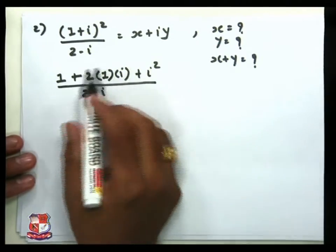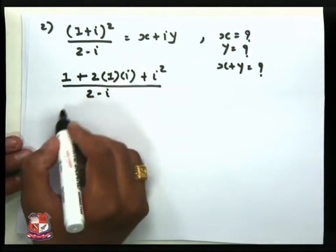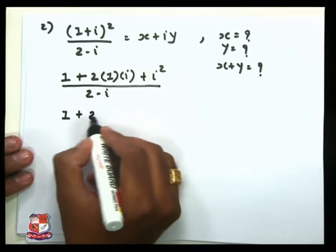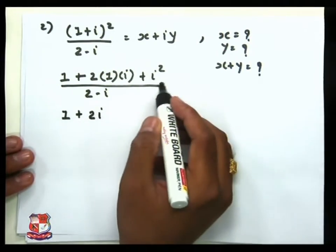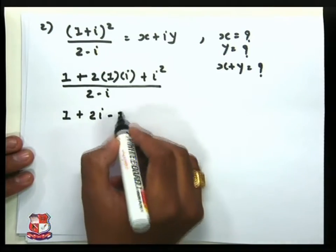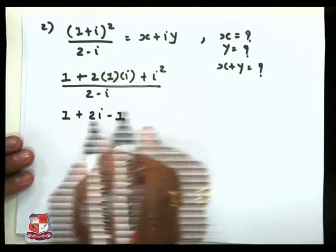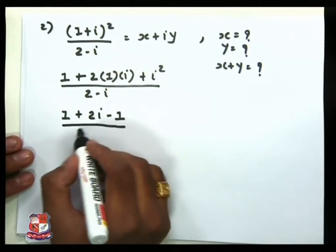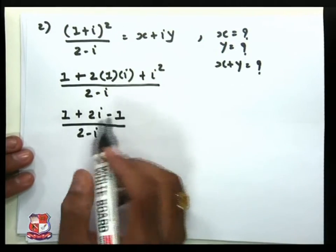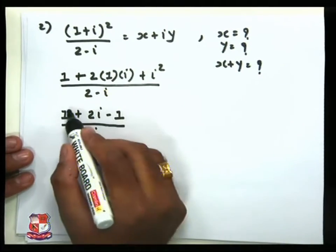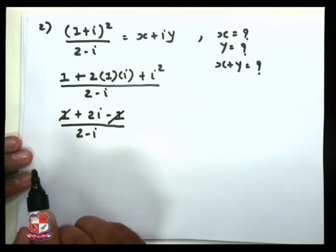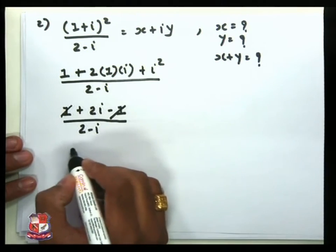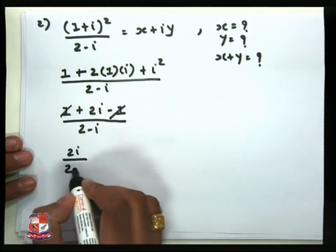Now simplify the numerator: 1 + 2i + i². Since i² = −1, we replace i² with −1, giving 1 + 2i − 1 divided by (2−i). Applying the arithmetic: 1 and −1 cancel out, so the final result is 2i / (2−i).